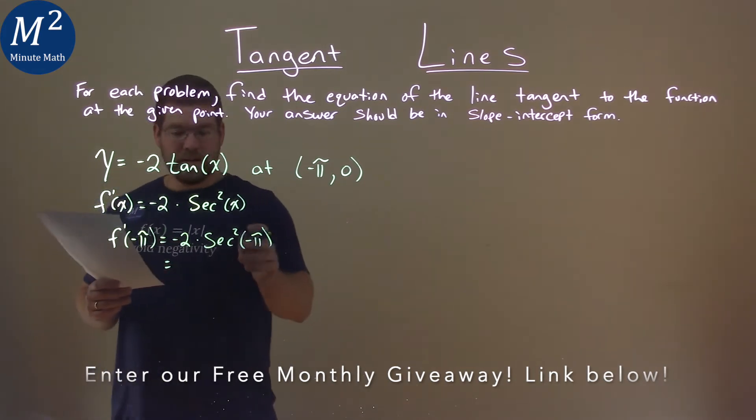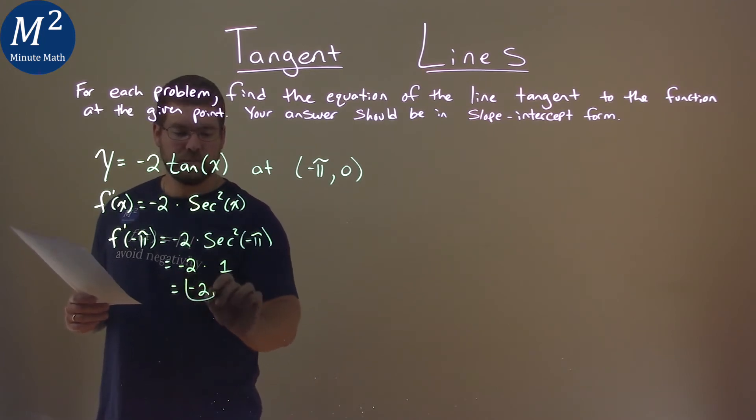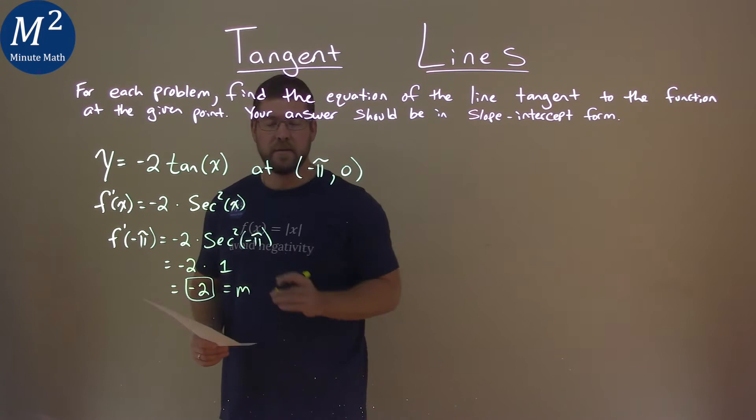Negative 2 times secant squared of negative pi. Well, secant squared of negative pi is 1. So we have negative 2 times 1, which is negative 2. And that's our slope right there, negative 2.